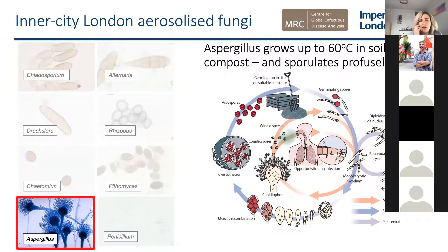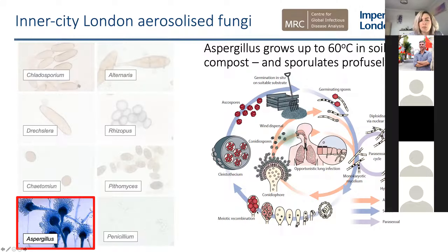The predominant aerosolised fungus we were spotting on the Burkhard in the Paddington spore trap was Aspergillus. It's a fascinating organism — it can grow up to 60 degrees Celsius in soil and compost, and it sporulates profusely. This figure from one of Paul Verweij's papers shows the three life cycles of Aspergillus: a sexual cycle creating cleistothecia, an asexual cycle thought to be the most predominant, and a hypothesised parasexual cycle. There are opportunities here for recombination through the sexual life cycle, generating new combinations of resistance polymorphisms, and then widespread dispersal through asexual reproduction.